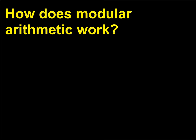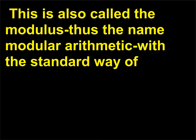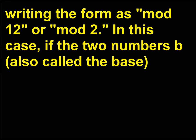How does modular arithmetic work? In modular arithmetic, numbers wrap around when they reach a fixed quantity. This is also called the modulus, thus the name modular arithmetic, with the standard way of writing the form as mod 12 or mod 2.